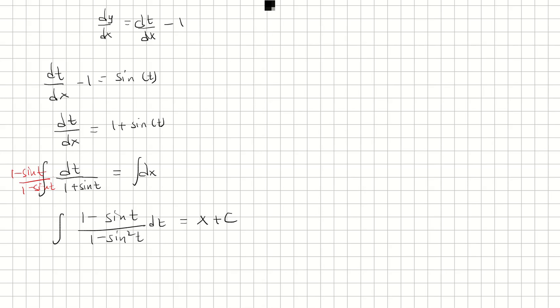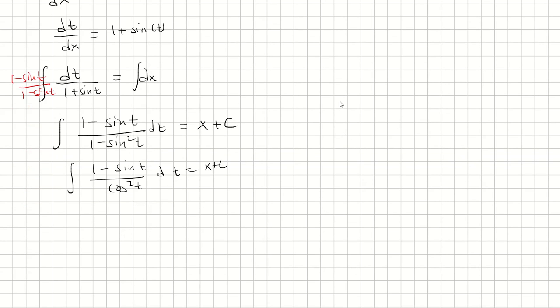Now from here, 1 minus sine squared is cosine squared. So I'll split this up. 1 minus sine t over cosine squared equals x plus c. We'll make two fractions: 1 over cosine squared minus sine over cosine squared equals x plus c.